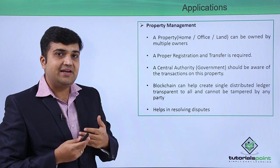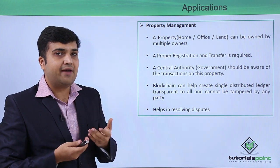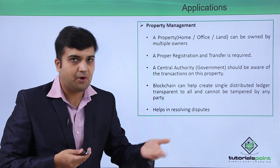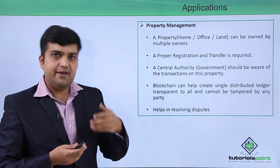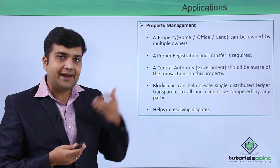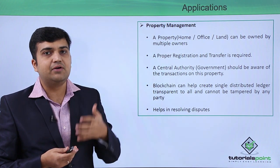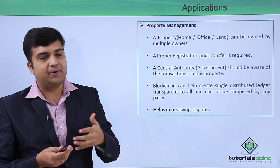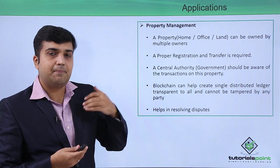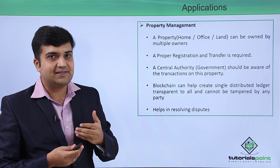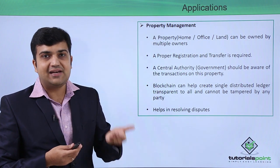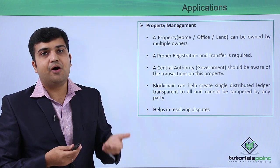Generally, the government should have a track record or a history of the ownership of a given property. If we have the ownership history of a given property, we can actually understand who is the current owner of that particular property. So whenever a sale or a buying of that property takes place, there should be a transaction entry for the transfer of ownership.